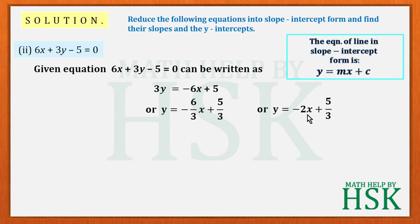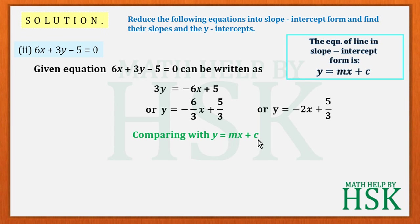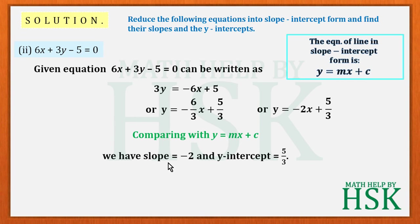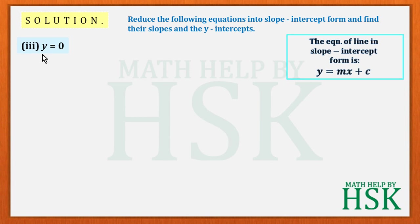So the equation becomes y = -2x + 5/3, which is now in slope-intercept form. Comparing with y = mx + c, the slope m = -2 because the coefficient of x is -2, and the y-intercept c = 5/3.